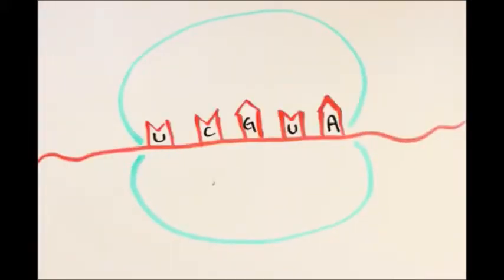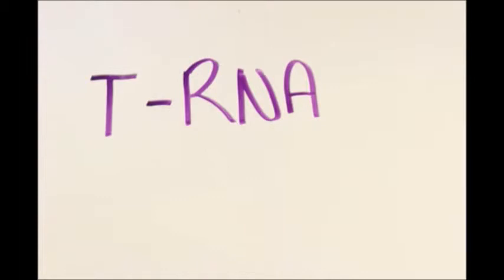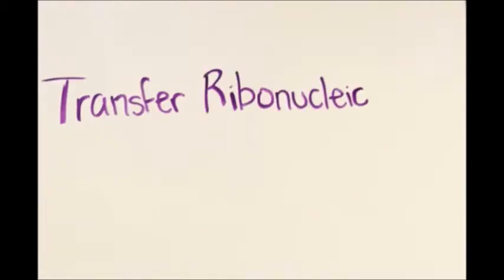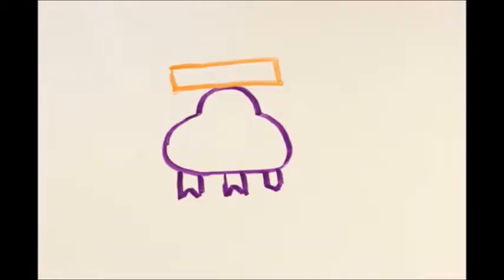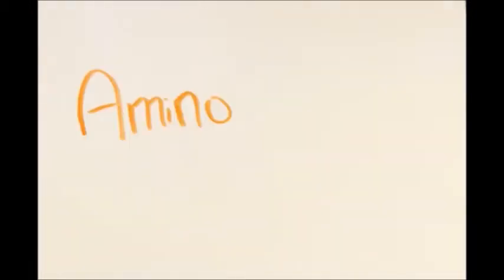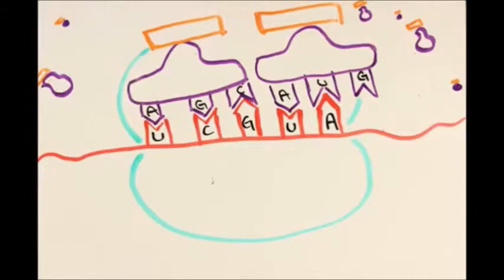As it fits itself onto a ribosome, things like this come along. They are called tRNA, which stands for transfer ribonucleic acid. Now, every tRNA carries one of these little blocks of proteins called amino acids. This tRNA then reads and attaches themselves to the mRNA in sets of three.